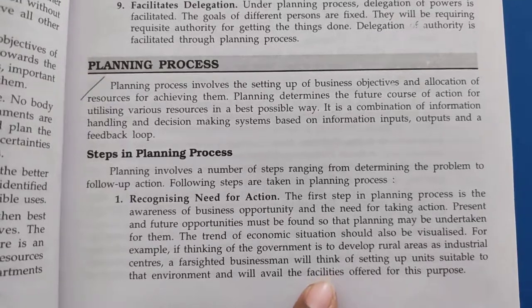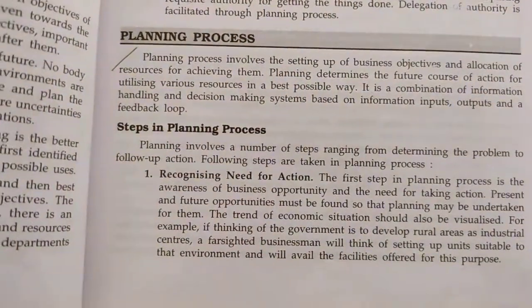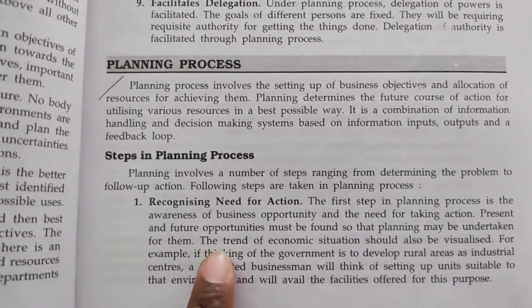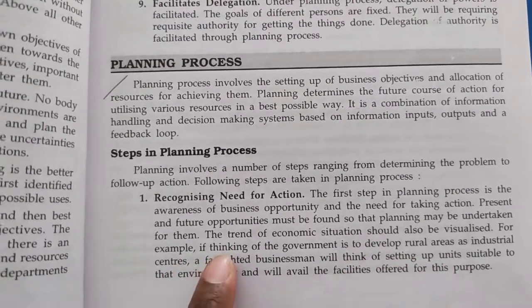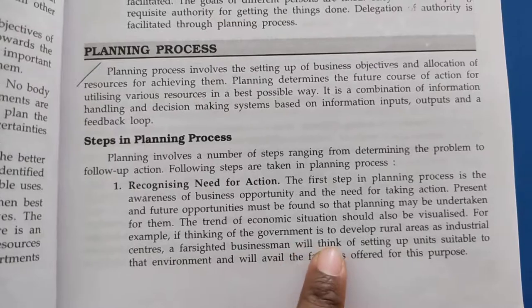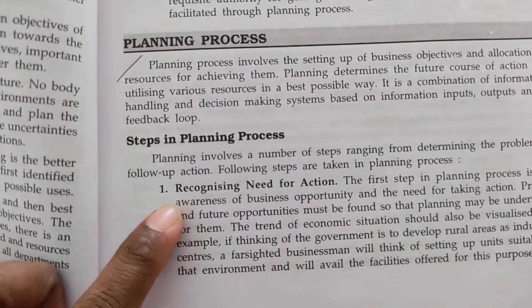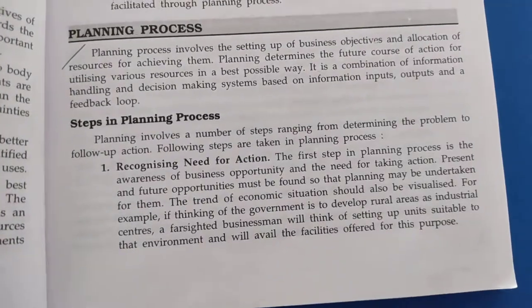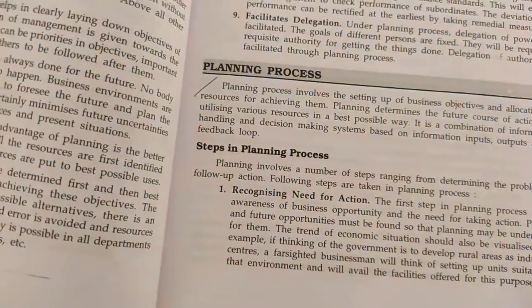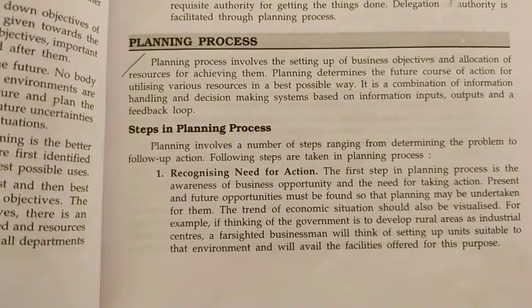The first step in the planning process is the awareness of business opportunity and the need for taking action. Present and future opportunities must be found so that planning may be undertaken for them. The trend of the economic situation should also be visualized. You have to wait for an opportunity for that business, and you have to think whether the plan you have made will be sustained in future or not.